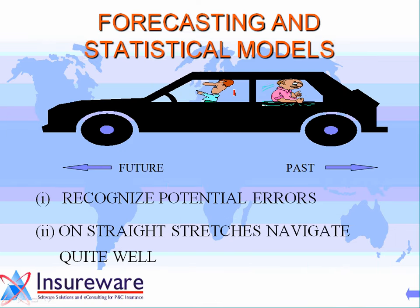Forecasting the future can be likened to driving a motor car where the windscreen is opaque. You're the actuary statistician sitting in the back seat, looking out the back window, telling the driver where to go. If you have a straight road, you tell him to continue straight. But if the road is changing directions haphazardly and you don't know where you are, it's very hard to tell the driver where to go — some say stop, but only if you want to be liquidated, in the loss reserving context.